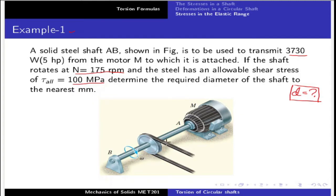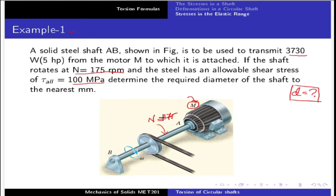In the question, it is given that a motor M produced 3730 Watt power, and this power is transmitted through shaft AB. The rotation of shaft AB is 175 RPM. The allowable shear stress on the steel shaft is 100 MPa.